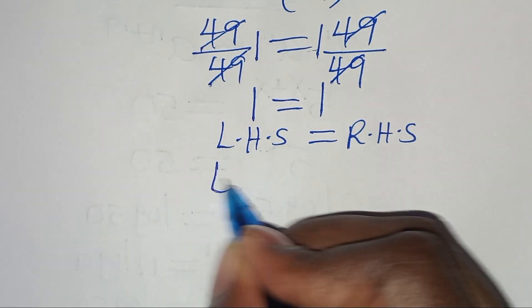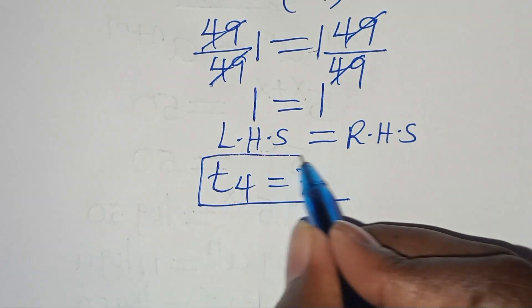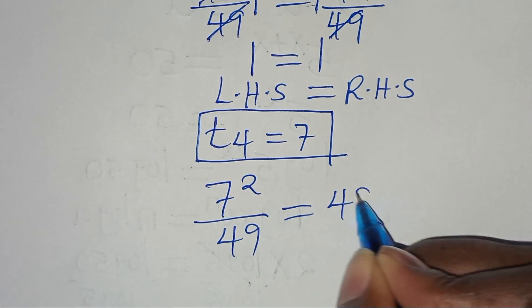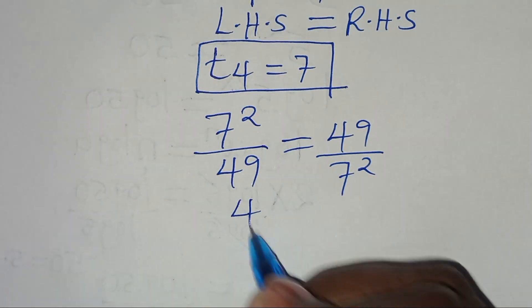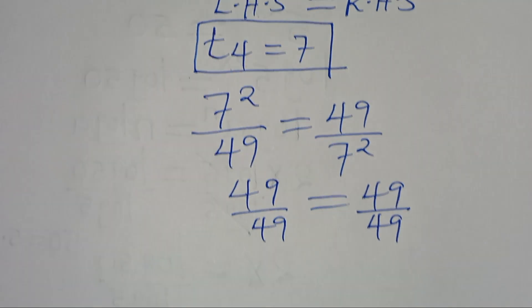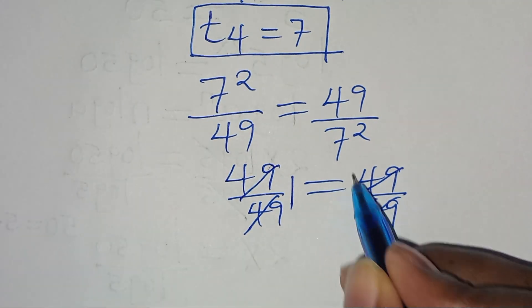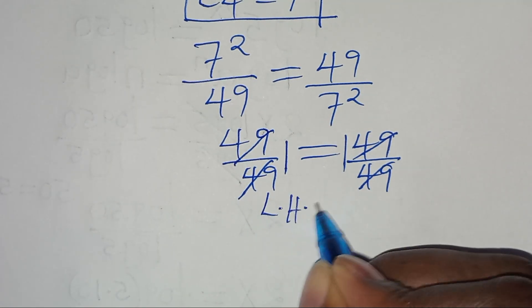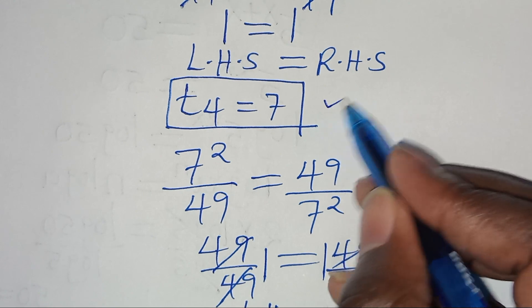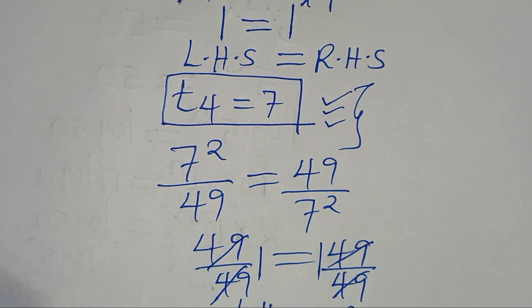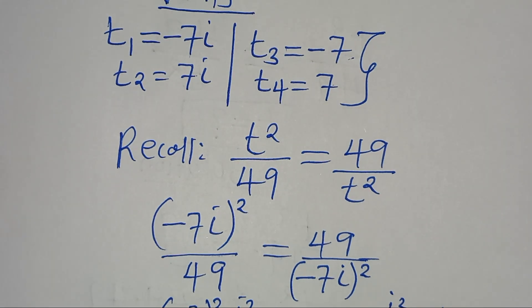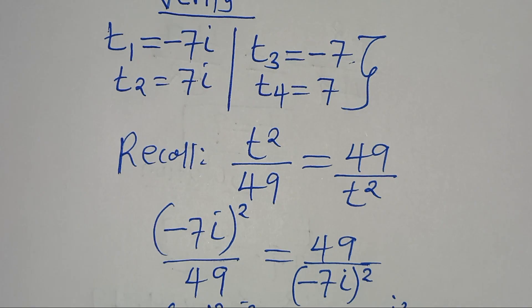For t₄ equals 7: we have 7 squared divided by 49 equals 49 divided by 7 squared, giving 49 over 49 equals 49 over 49, which is 1 equals 1. The left-hand side equals the right-hand side, confirming t₄ satisfies the equation. All four solutions t₁, t₂, t₃, and t₄ satisfy the equation. Please like this video and subscribe.